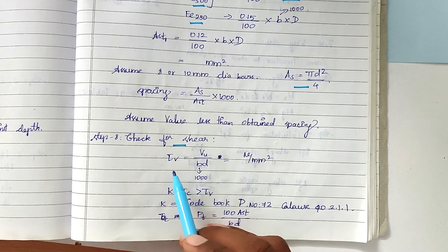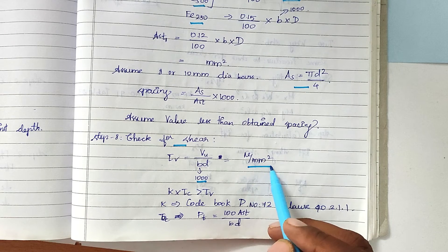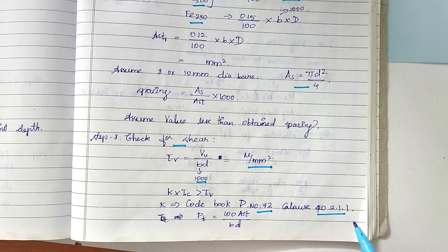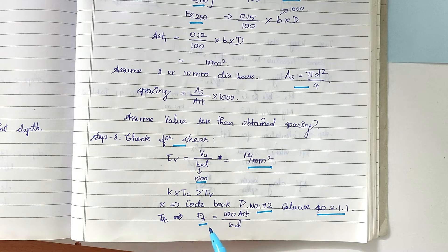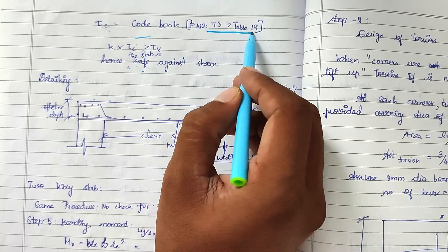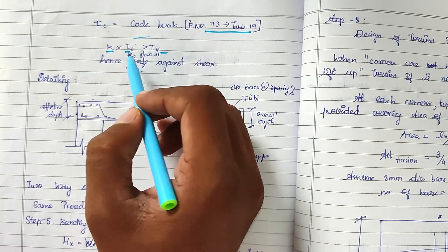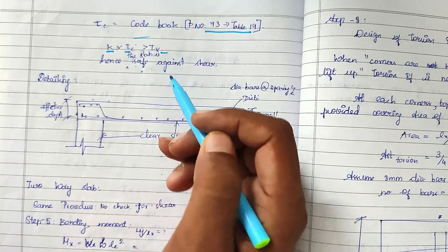Next, we check for shear. We calculate τv = Vu / (b × d), with b = 1000 mm. From the code book, page 72, clause 40.2.1.1, we take the k value and τc value. We also find the percentage of steel: pt = 100 × Ast / (b × d), and from page 73, Table 19, we get τc. Whenever k × τc is greater than τv, the slab is safe against shear.